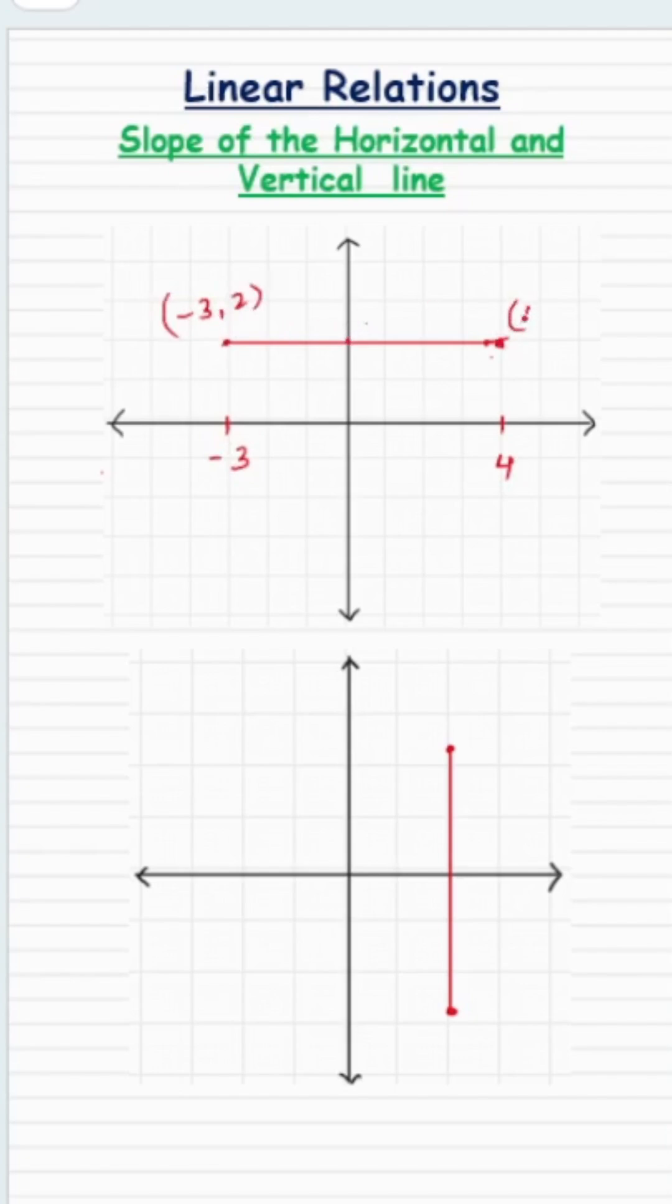And over here, the coordinates of this point is 4 comma 2. So on any point on this line segment, the x values will be increasing or changing, but the y value will always stay as 2.